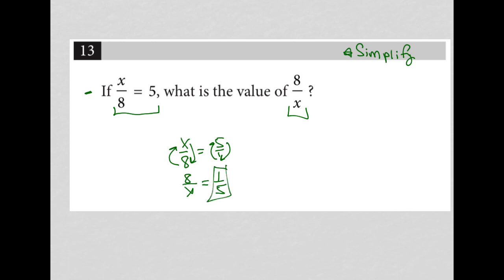Another way to do it, obviously, is to take this x over 8 equals 5 and multiply both sides by 8 so that you have x equals 40. Then the question asked for 8 over x, which is the same as 8 over 40, and reducing that is 1 over 5.